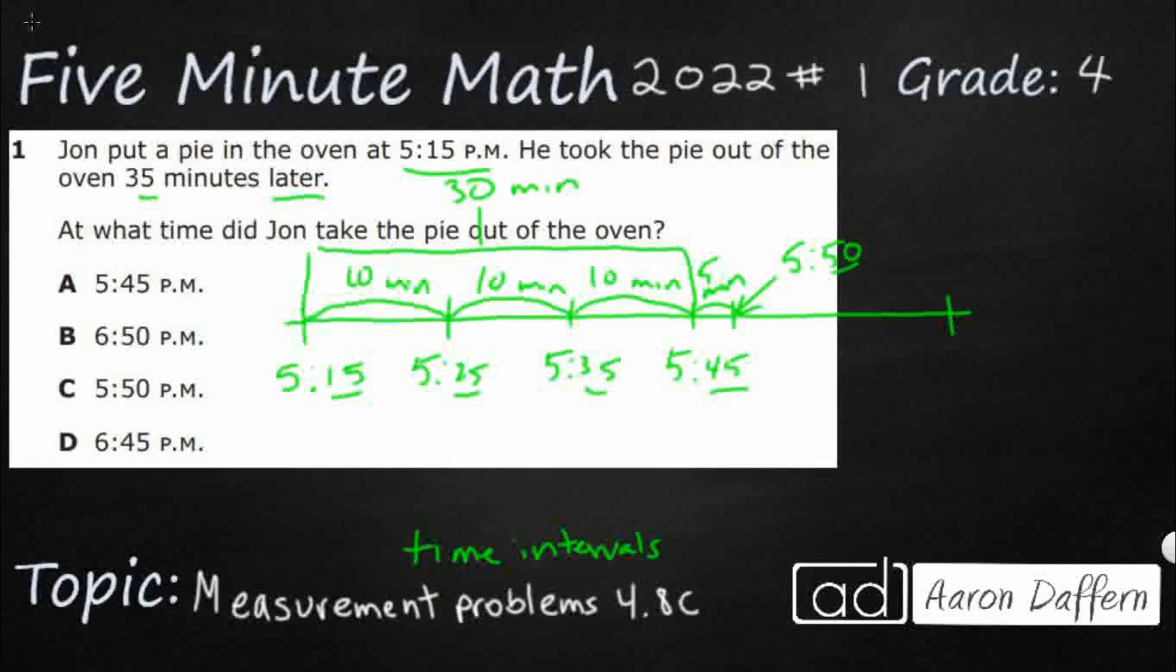But this problem is actually pretty lucky because we stayed within the hour. That's why this type of solution strategy is pretty good. Because if you were to go over the hour, let's say if you were to go 5:15 or 5:45 plus 30 minutes, well, you would have to go over six o'clock. And that's kind of where things get a little bit weird. And so a timeline like this is actually going to be a little bit easier.